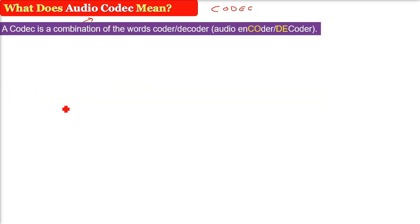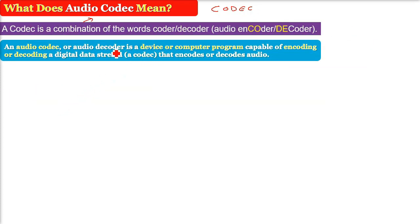An audio codec or audio decoder is a device or computer program capable of encoding or decoding a digital data stream that encodes or decodes audio.